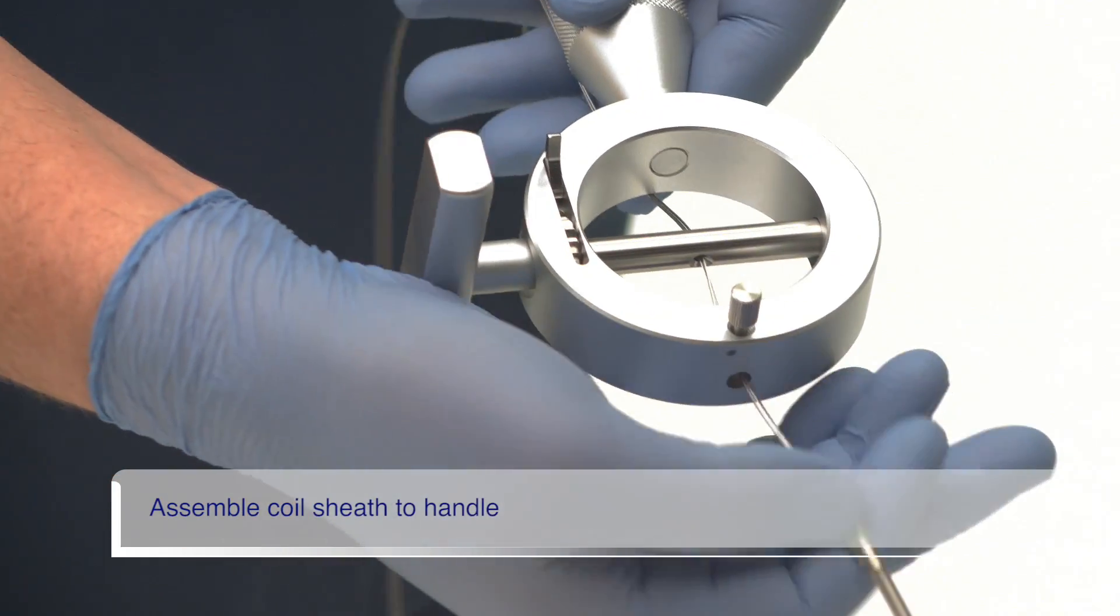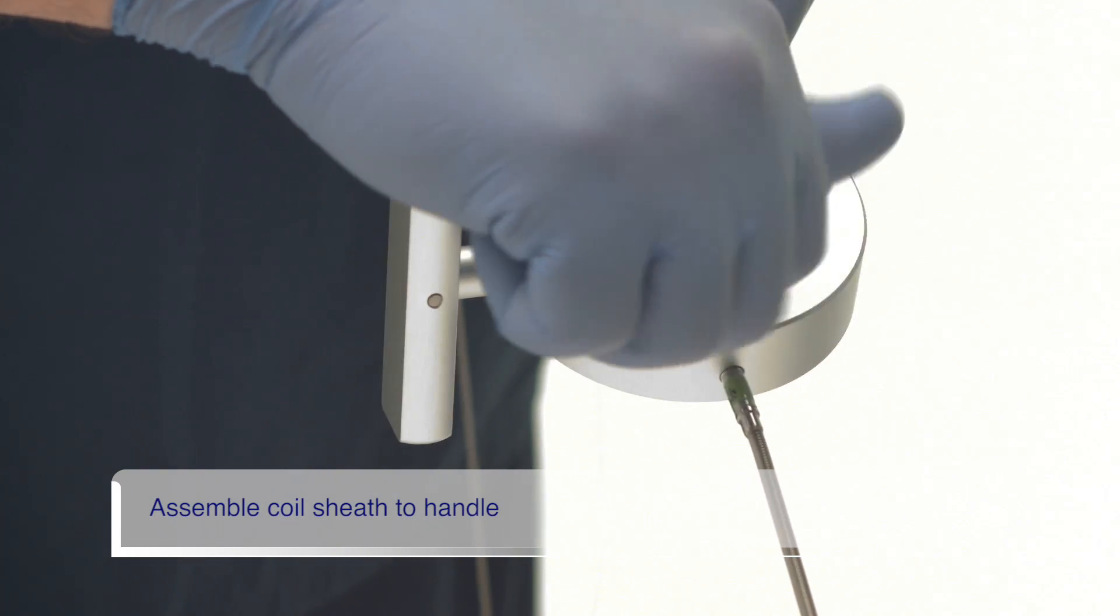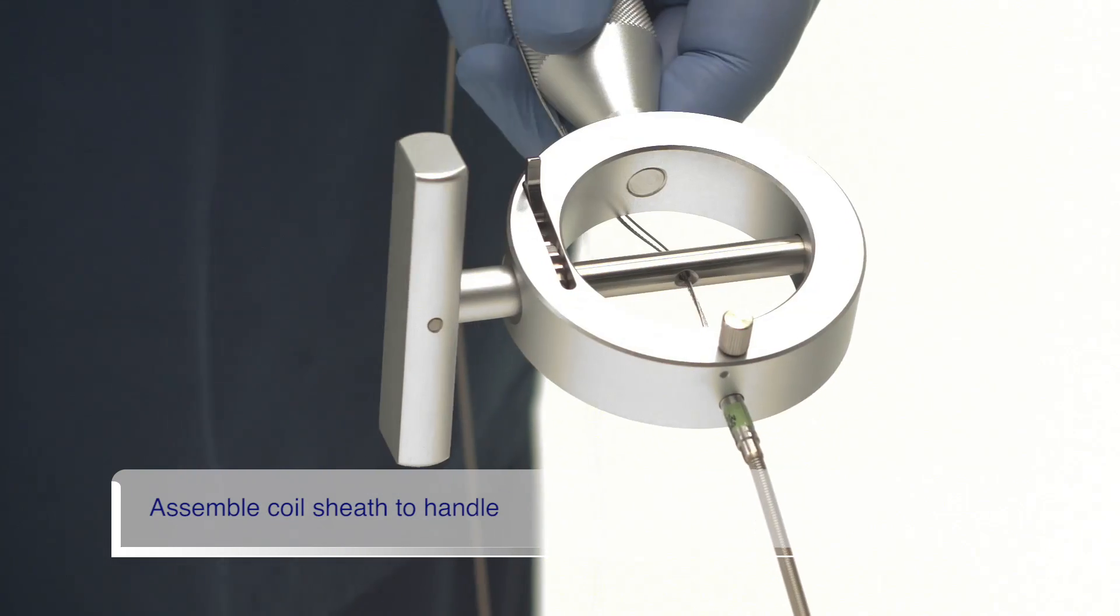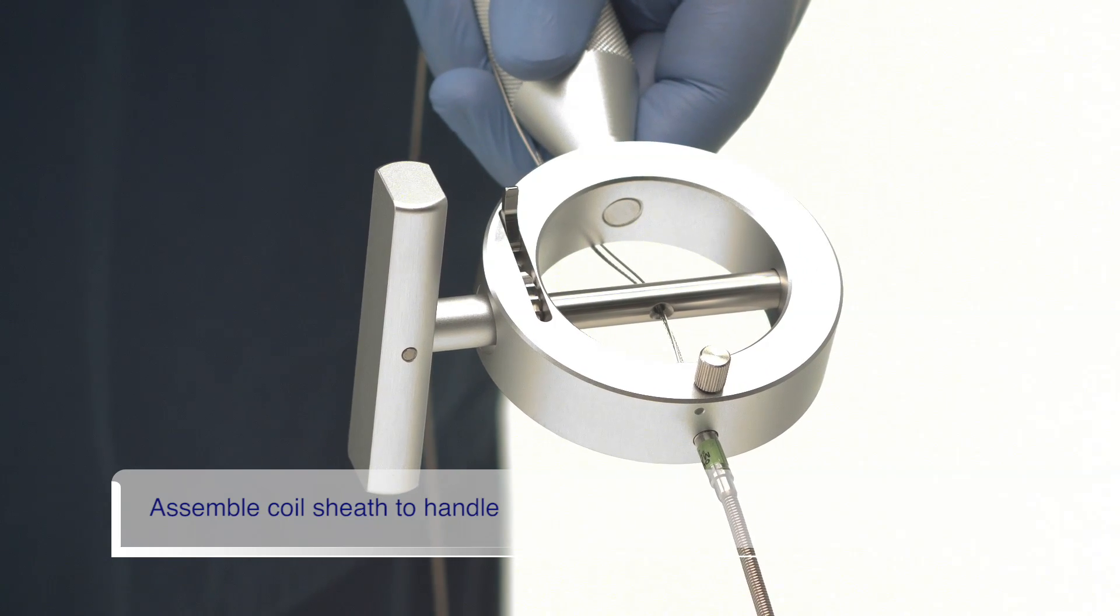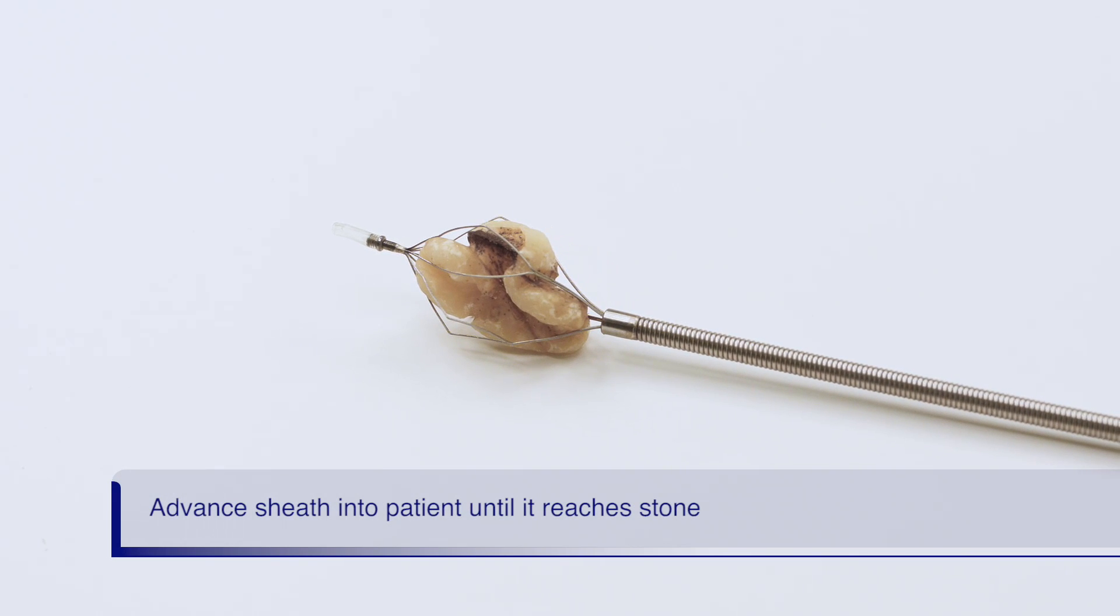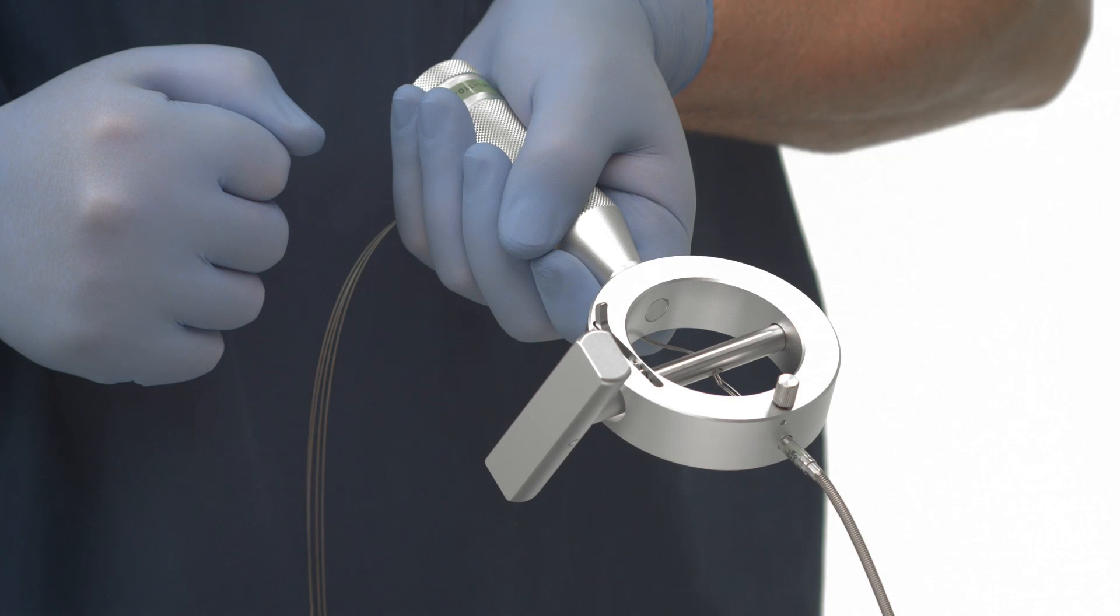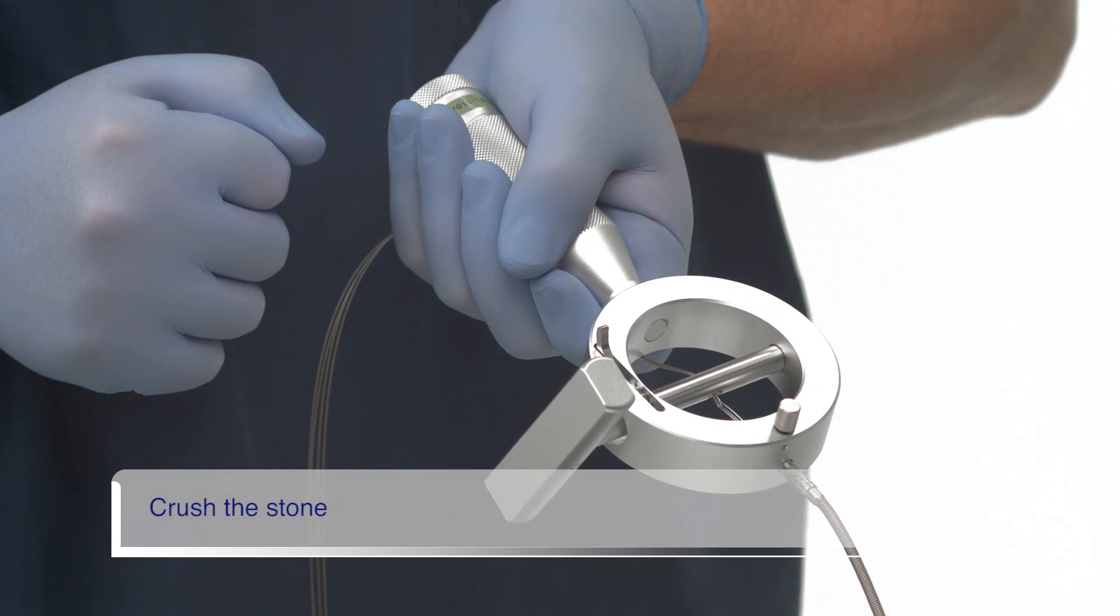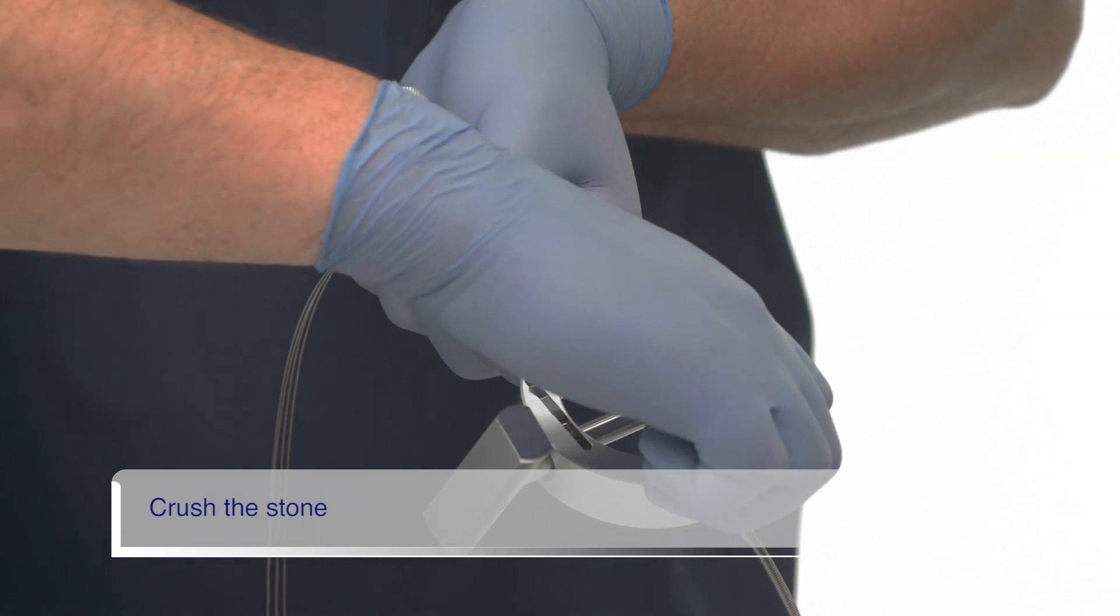Insert the green proximal end of the coil sheath into the hole at the top of the emergency lithotriptor handle. Lock the sheath in place by turning the thumb screw clockwise as shown. Confirm the sheath has reached the stone. Ensure that the ratchet is in the locked position and confirm the coil sheath is locked into the handle.